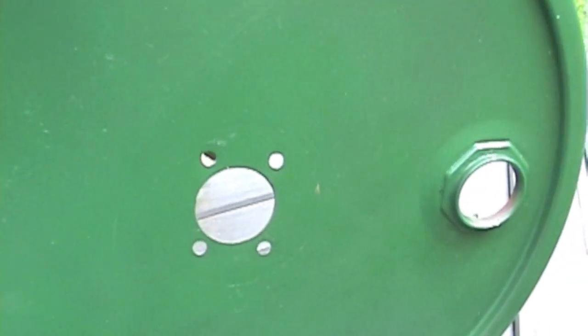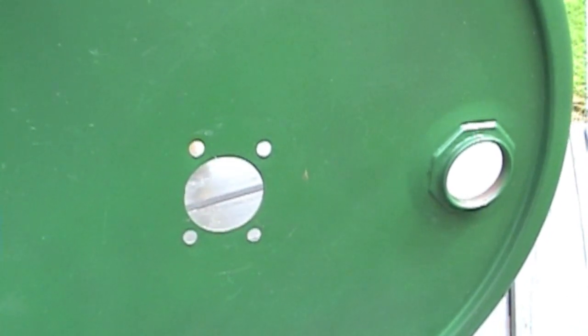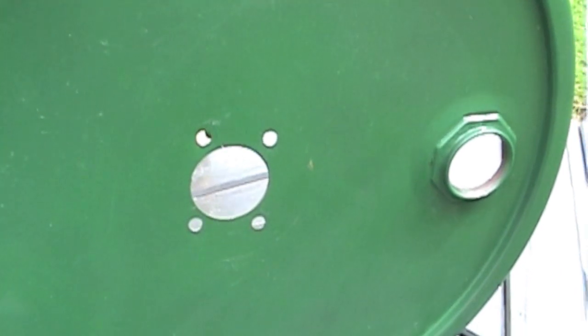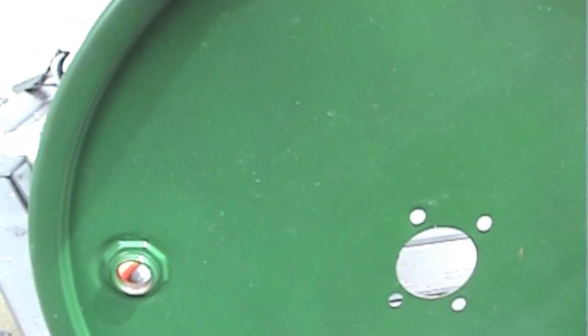This is how you make a cover to put your centrifuge on, using a 55 gallon open top oil drum.